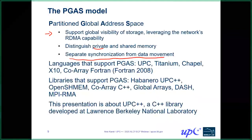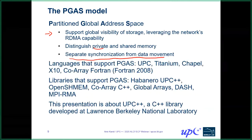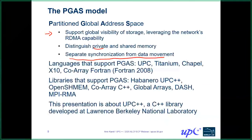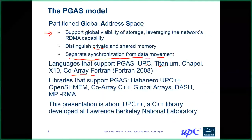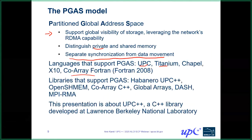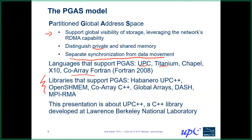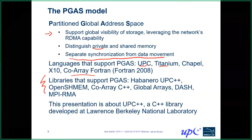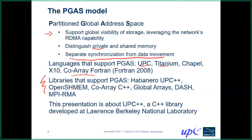The PGAS model is not new — it has been around for over 20 years, with many different languages and libraries supporting it. The first generation included UPC, Titanium, and Coarray Fortran. The next generation languages included Chapel and X10. More recently, there has been a lot of work in terms of libraries for the PGAS model primarily implemented in C++, including UPC++, Coarray C++, DASH, and several other libraries.